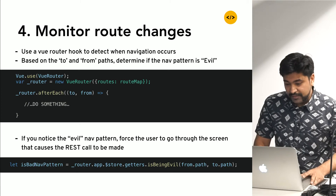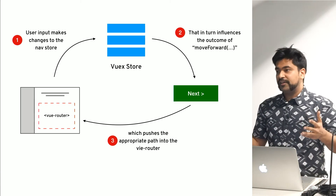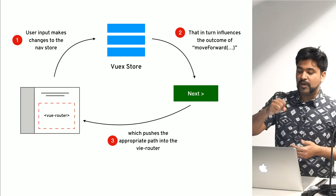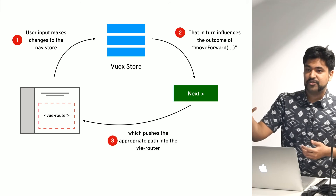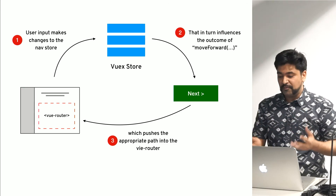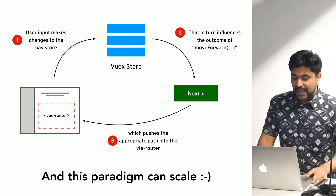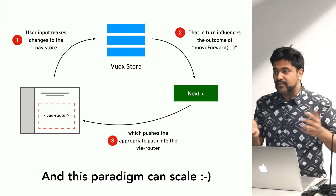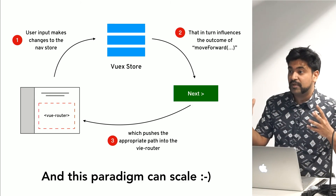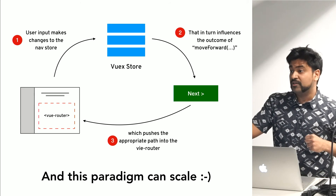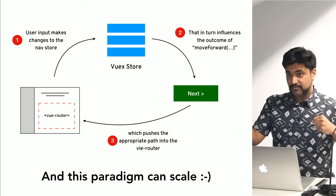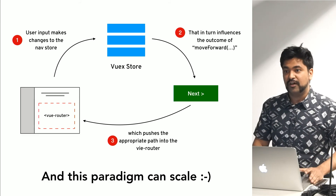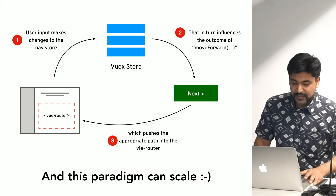That was basically the architecture we had: the router was driven completely by the store, and the store was constantly mutated by UI interactions. That is how we handled this crazy navigation. The good thing is that since then, many more business rules have been added to the navigation, and this paradigm really scales well on the front end. We just identify: is there a decision being made? Write some business logic for it, mutate the state, check for evil navigation, and then Vuex and Vue Router take care of everything else.